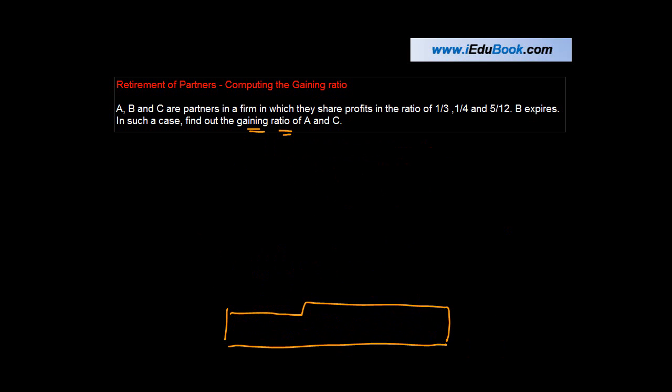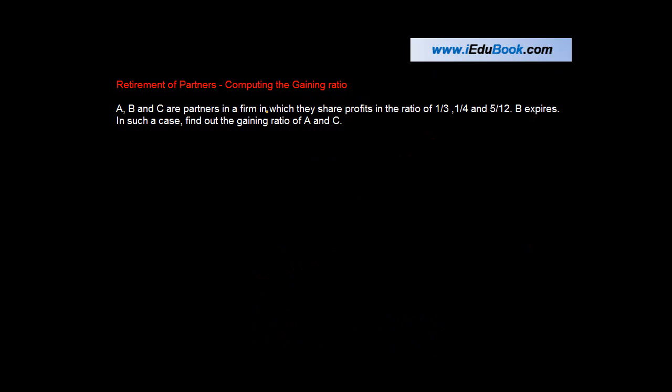A, B, and C are partners in a firm in which they share profits in the ratio of 1:3, 1:4, and 5/12. Now here the denominators are different, right?